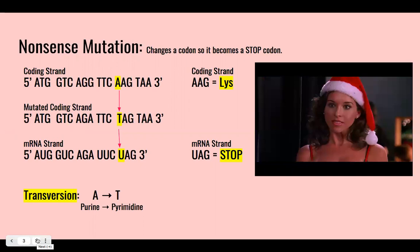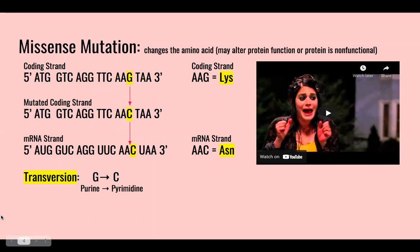A missense mutation changes the amino acid and may alter the protein function. Here, G switched with C changes from lysine to become asparagine, a completely different amino acid, similar to how Cady Heron was trying so hard to pretend to be a plastic that she became one.